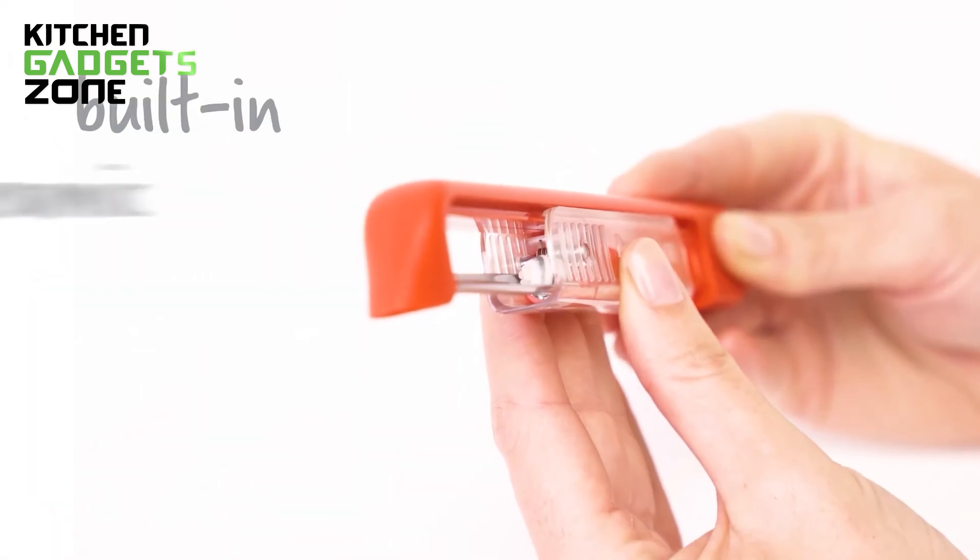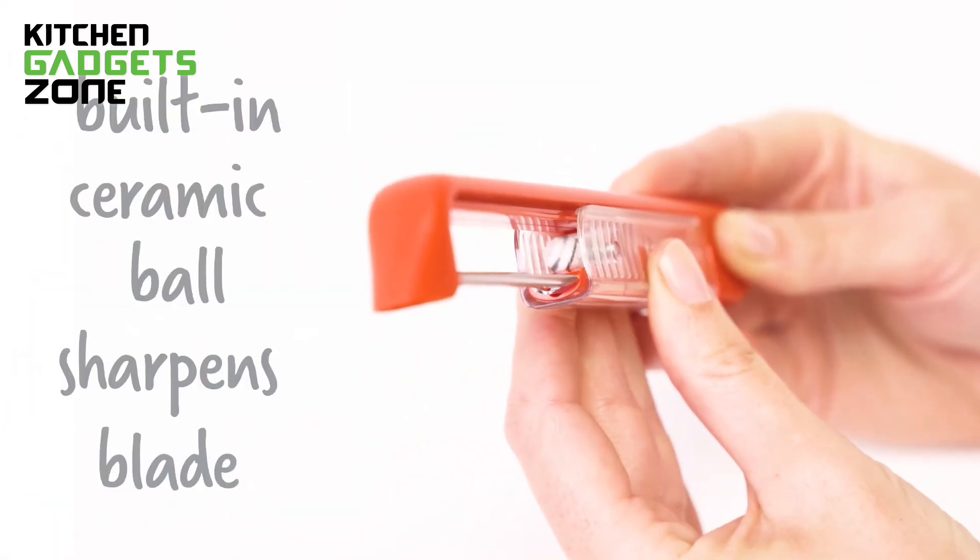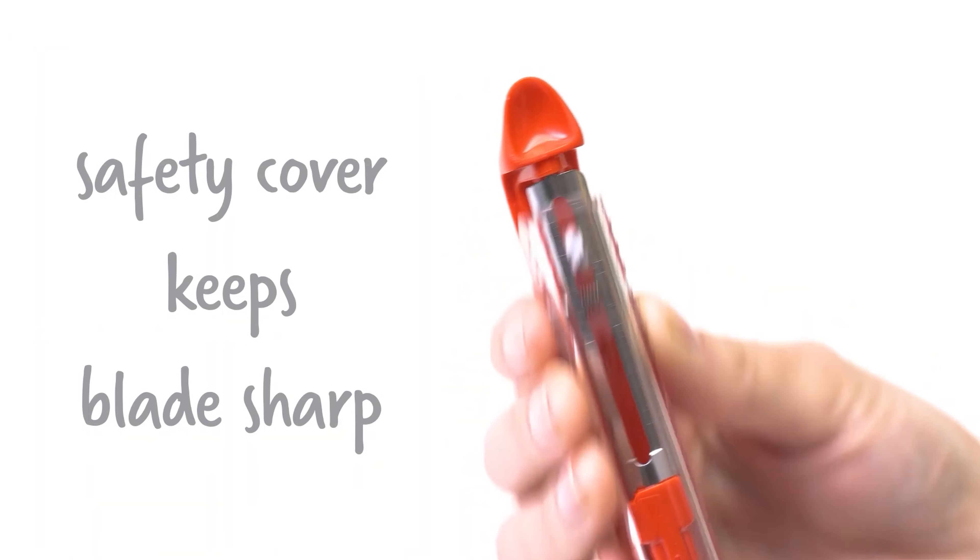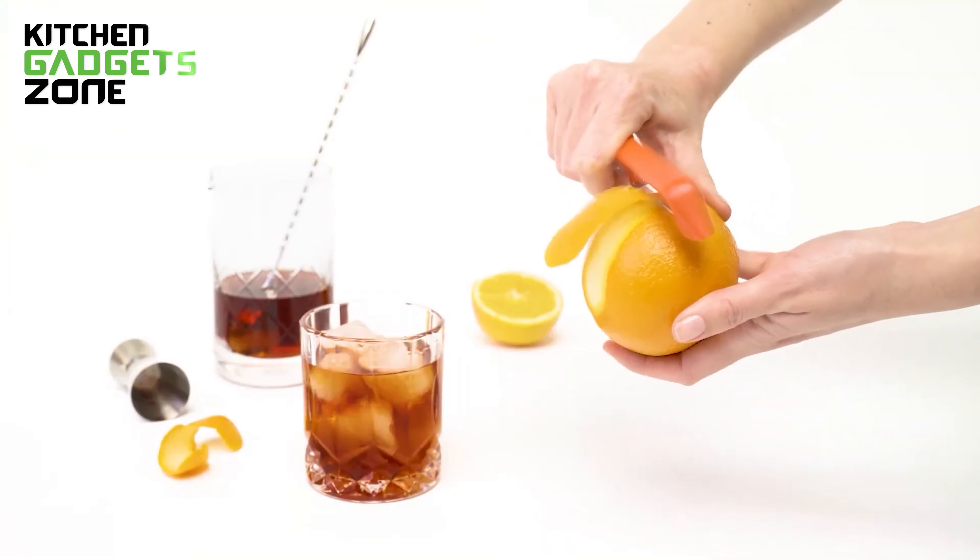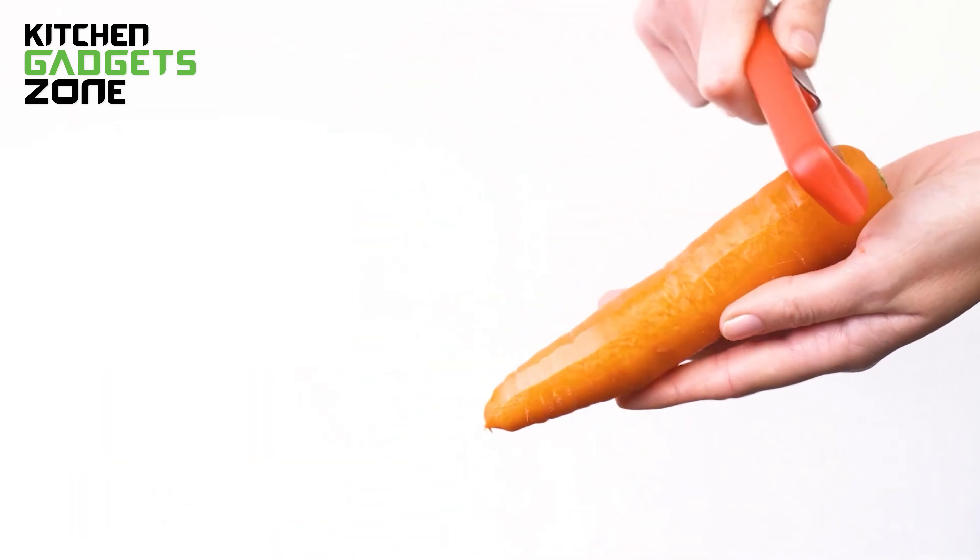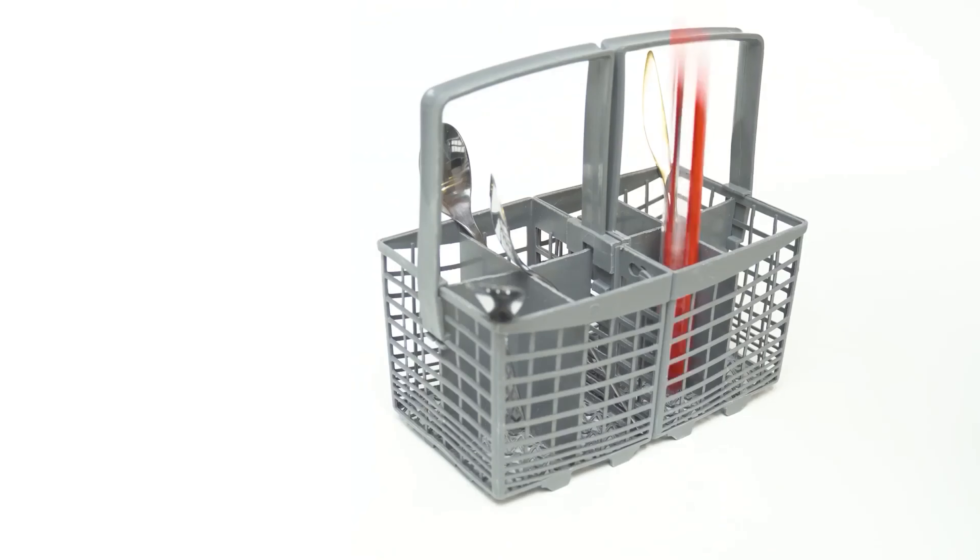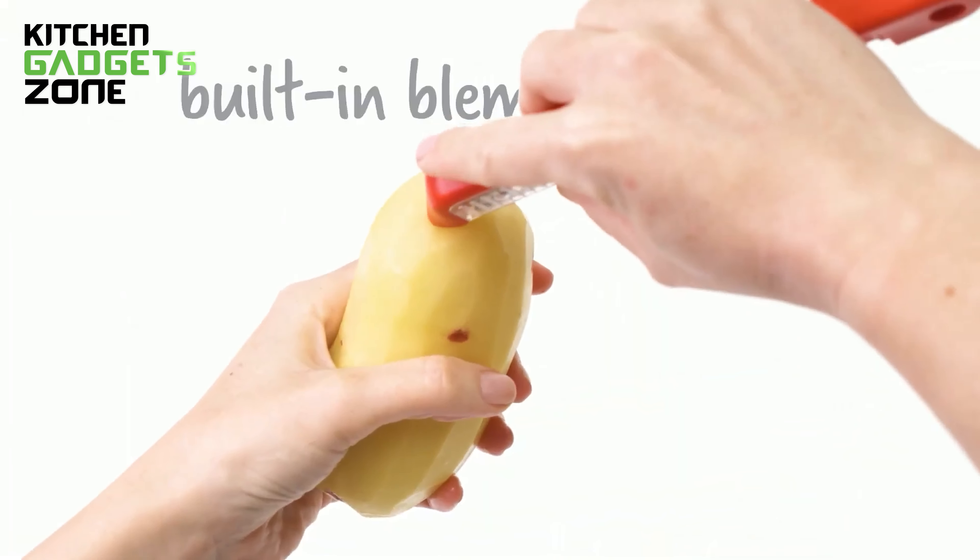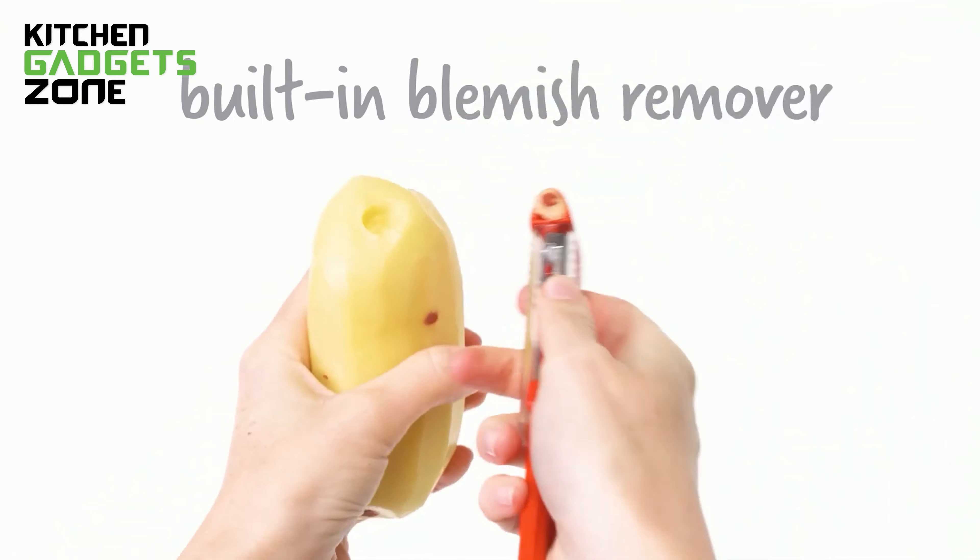What really sets the Sharple apart is its unique safety cover with a built-in ceramic ball sharpener. Every time you open or close the protective case, the blade is automatically sharpened and honed. The swiveling blade minimizes waste, while the clever handle profile provides maximum control for both left- and right-handed users. The handle tip doubles as a convenient and highly effective potato eye and blemish remover.